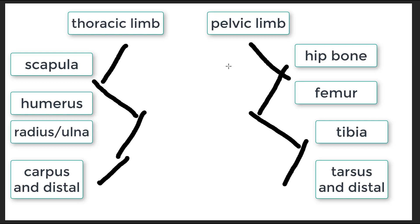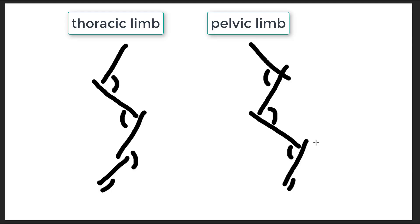We'll look at joints and consider their flexor surfaces. For the hip joint, the flexor surface is cranial; for the shoulder joint, it is caudal; for the elbow joint, it is cranial; and for the stifle, it is caudal. You should start to notice the mirror image nature of these structures. At the tarsal joints, the flexor surface is dorsal, while at the carpal joints it is palmar. For the interdigital and metatarsophalangeal joints it is plantar, and for the interdigital and metacarpophalangeal joints of the thoracic limb it is also palmar.